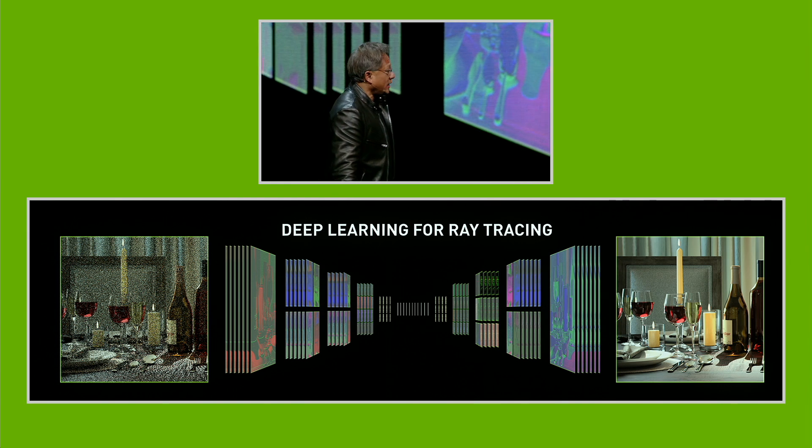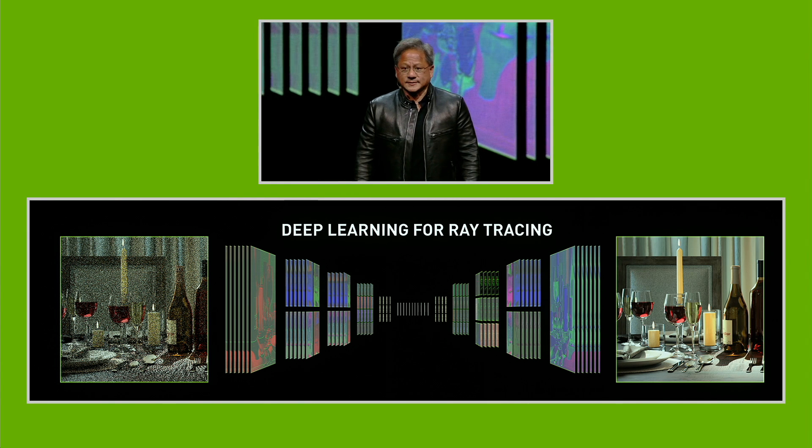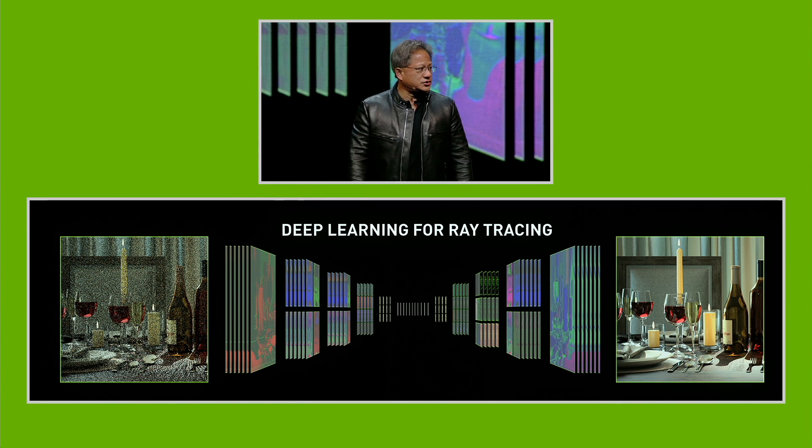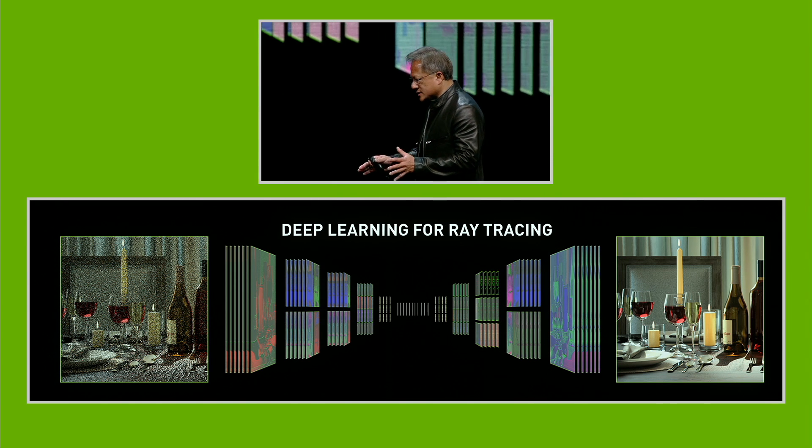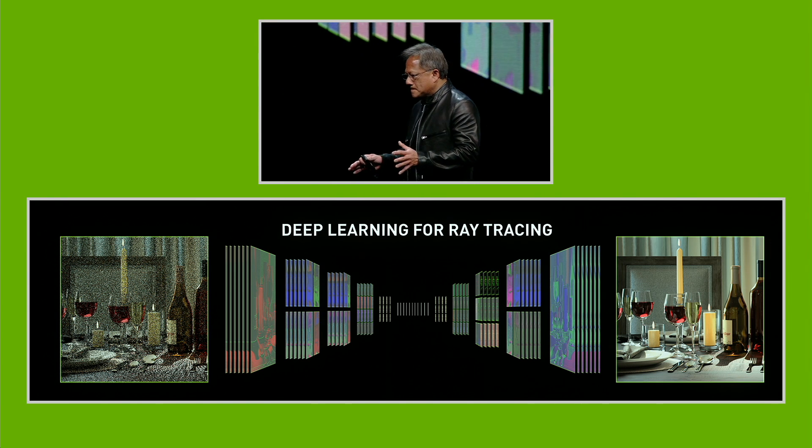Now, one of the areas we've applied this to is ray tracing. Ray tracing, as you know, is computationally incredibly intensive — following photons around as we try to regenerate an image. It's very computationally intensive. And so one of the things that we decided to do is: what happens if we were to teach a network to fill in the spots that we haven't rendered yet?